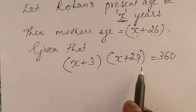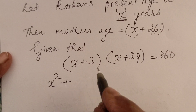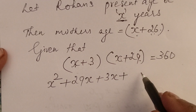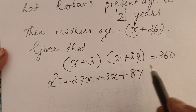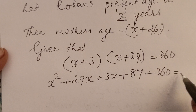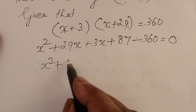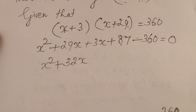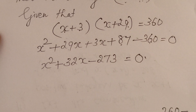We have to form a quadratic equation. (x + 3) into (x + 29) equals 360. Expanding: x² + 29x + 3x + 87 equals 360. Transposing: x² + 32x + 87 − 360 equals 0, giving x² + 32x − 273 equals 0. This is the required quadratic equation.